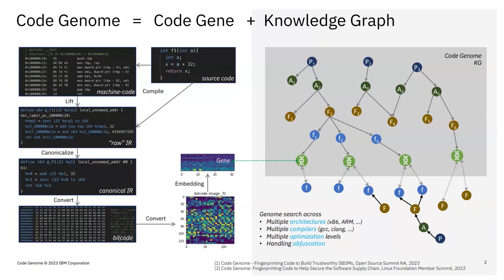In essence, Code Genome focuses on building a semantic fingerprinting of software. There are two main aspects of the project. The first is building a 'code gene' and embedding it into a knowledge graph to reason about software applications — their similarities, how packages, functions, and files within a package relate to each other, and how to identify attribution.